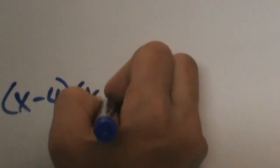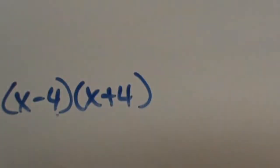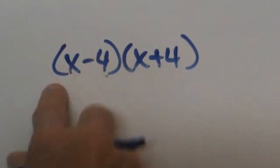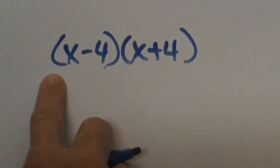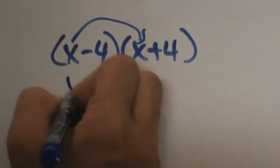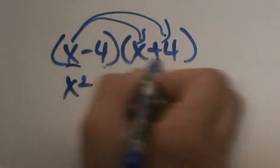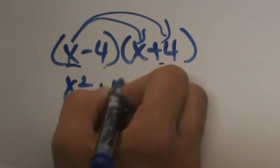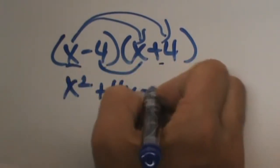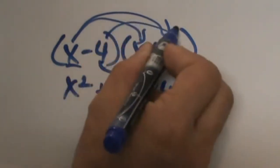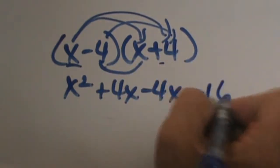But instead of being the same sign they are going to be opposite signs. You are going to have x plus 4 times x minus 4. So let's FOIL this out. First times first: x times x is x squared. Outer: x times 4 is positive 4x. Inner: negative 4 times x is negative 4x. And last: negative 4 times positive 4, or negative 16.